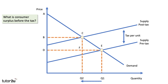First question: what is consumer surplus before the tax? Which area shows consumer surplus before the tax? Initially the price is D and the output is Q1, so the area of consumer surplus before the tax is area A, D, E.